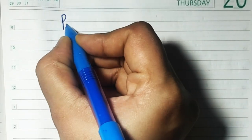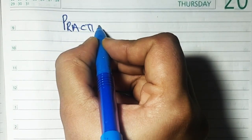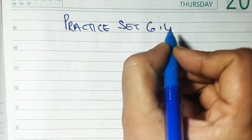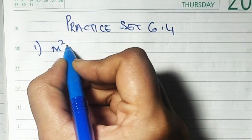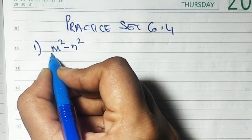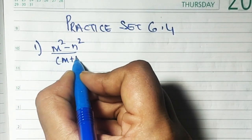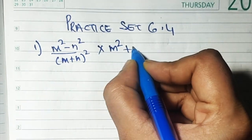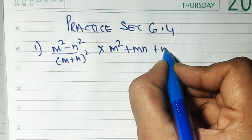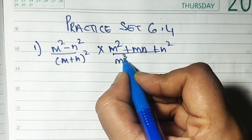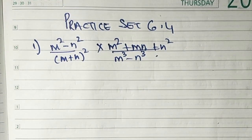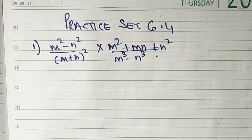Now let's start Practice Set 6.4, Sum number 1: (m² - n²)(m + n)² + (m² + mn + n²) upon m³ - n³. In order to solve sums in this exercise you need to know all the formulas. So come on, let's begin.